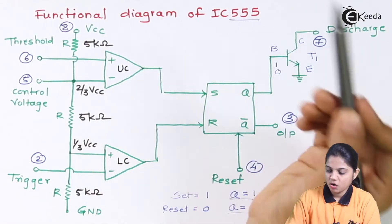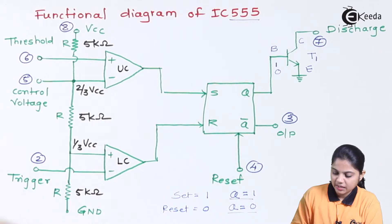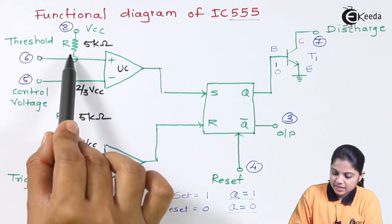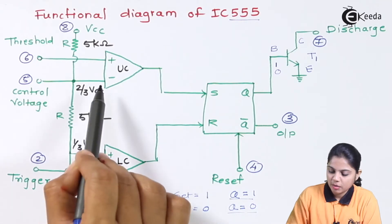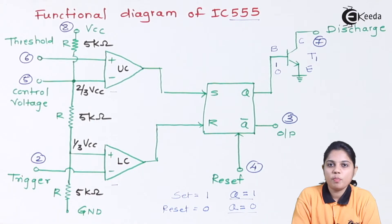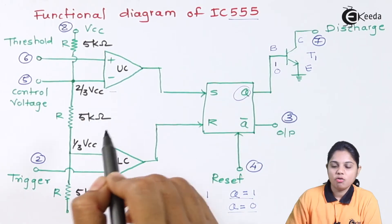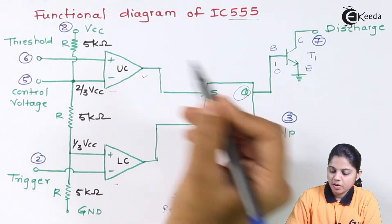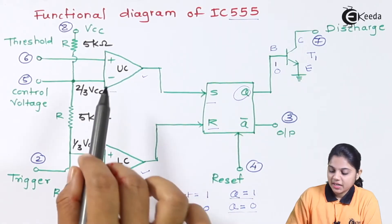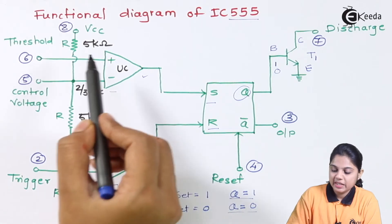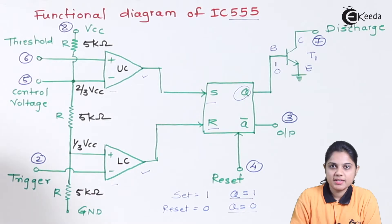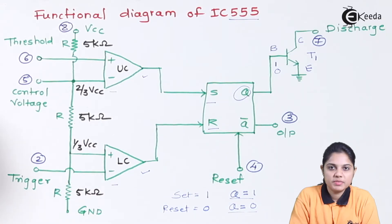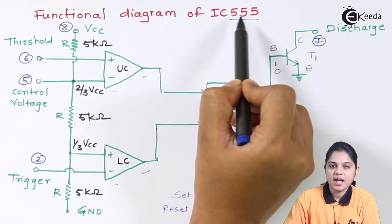The IC is named 555 because there are three resistors connected, each with a value of 5 kilo-ohms — so 5-5-5. These resistors decide the reference voltage for the upper comparator and lower comparator. The operation depends entirely on the output, which in turn depends on the set and reset condition, which is set by the upper and lower comparator outputs. That comparison takes place with respect to the reference voltage set by these three 5 kilo-ohm resistors — hence the IC is named the 555 timer.